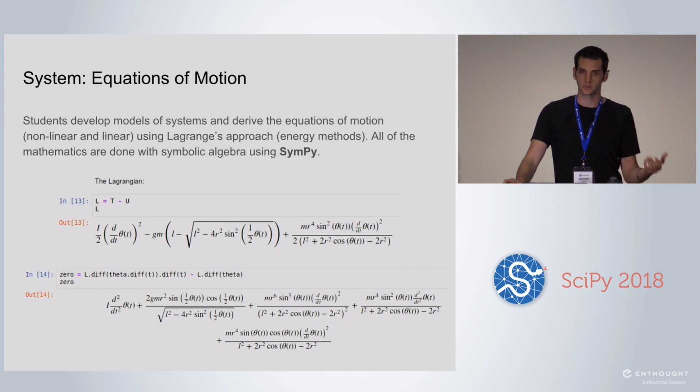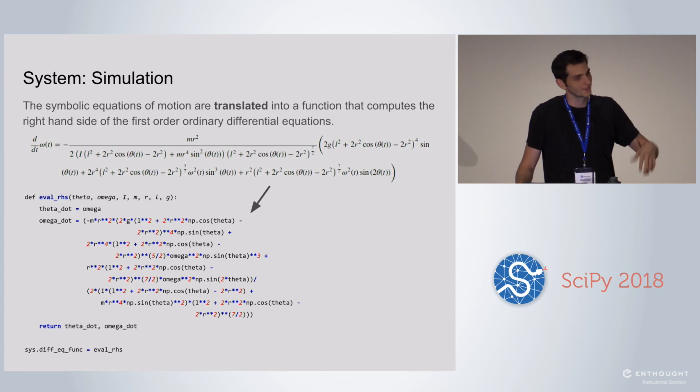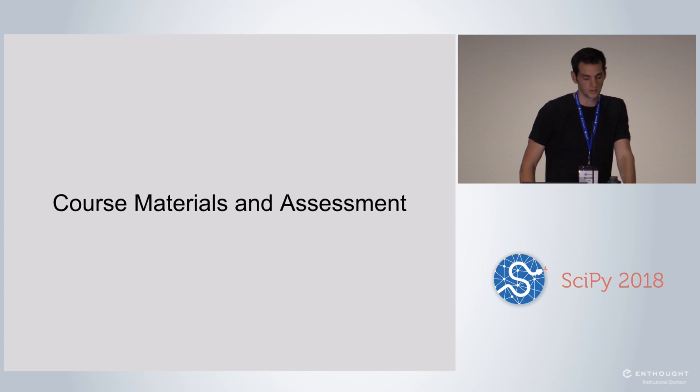The other thing systems have are equations of motion. We did introduce some symbolic mathematics to them. For example, if you can get the kinetic energy and potential energy of a system, which they should already be able to do because they've had dynamics, you can then use Lagrange's method to generate an equation of motion. Rather than do all these derivatives by hand, you can call some sympy and they fall out. After you do that, you can translate those symbolic expressions to numerical code, add it as a callback function. This is evaluating the right-hand side of the first order ordinary differential equations appropriate for a numerical integrator. Again, not inheriting from a base system class - they just use the base system class, add the differential equation function, and then it behaves like a new system.